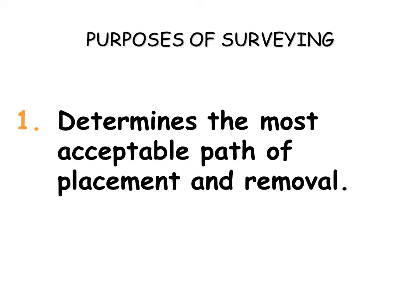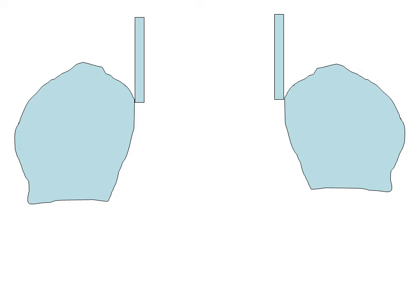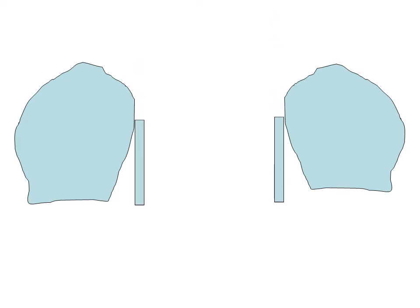15. The path of placement is the direction in which a restoration moves from the point of initial contact of its rigid parts with the supporting teeth to the terminal resting position, with rests seated and the denture base in contact with the tissues. The path of removal is exactly the reverse, since it is the direction of restoration movement from its terminal resting position to the last contact of its rigid parts with the supporting teeth.